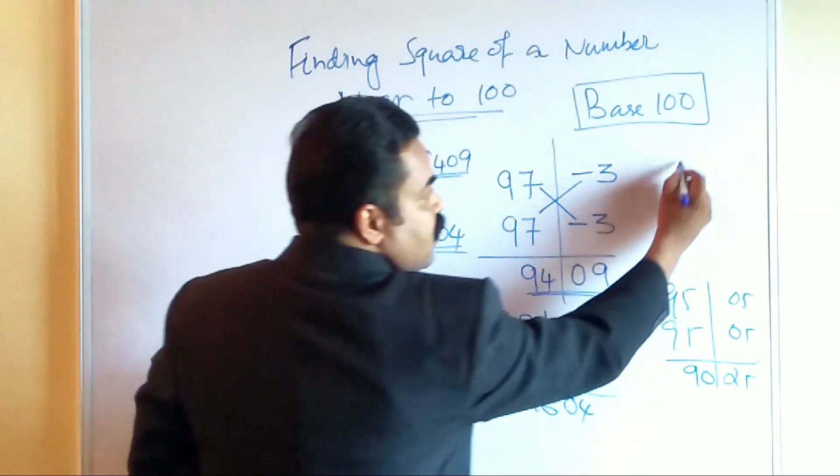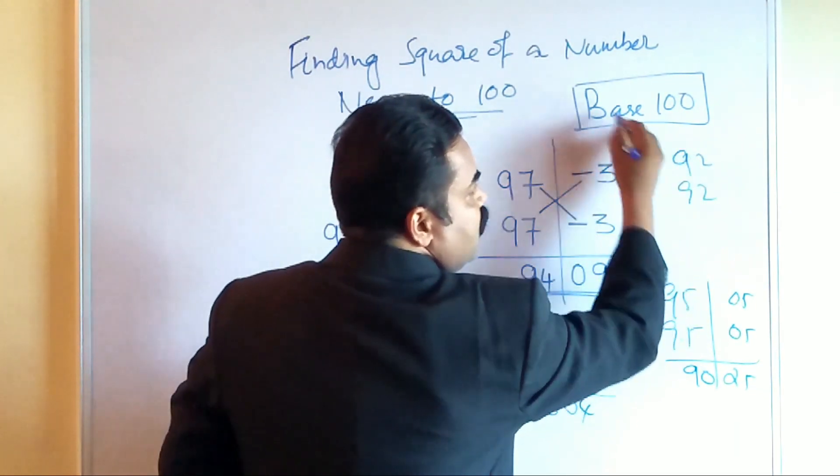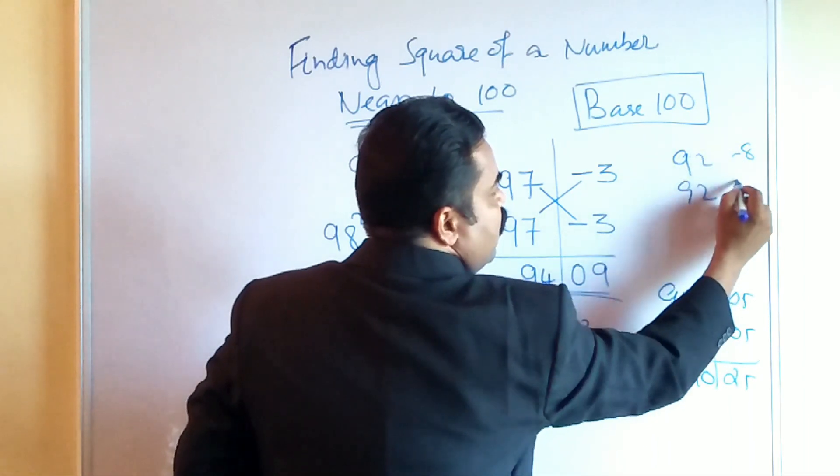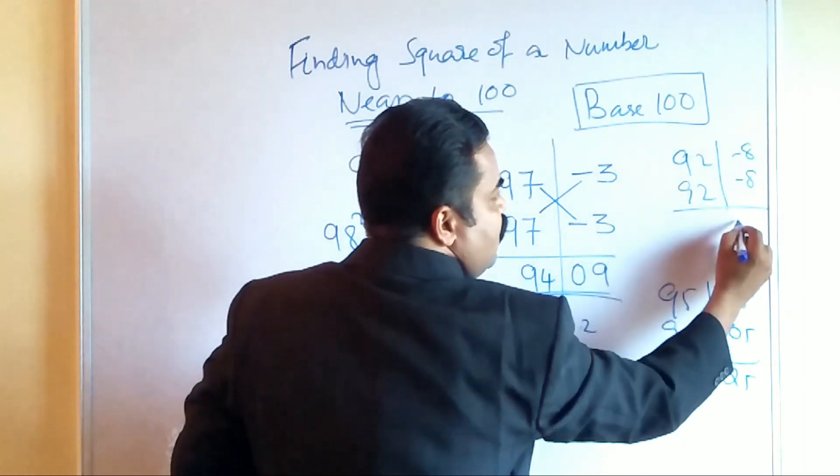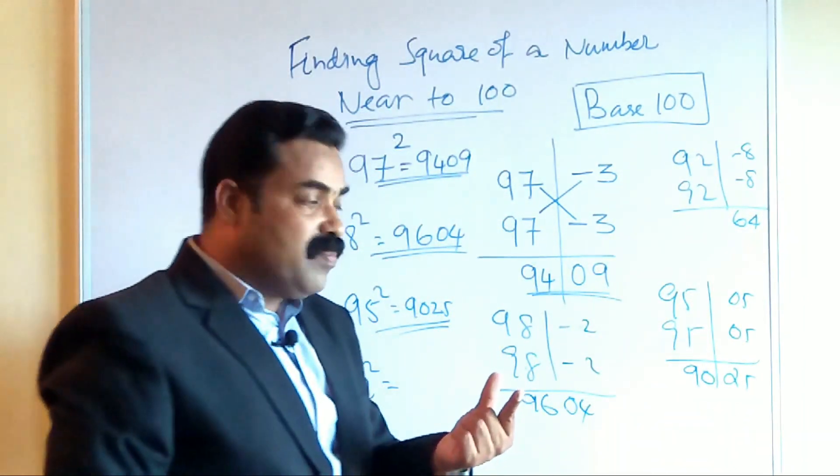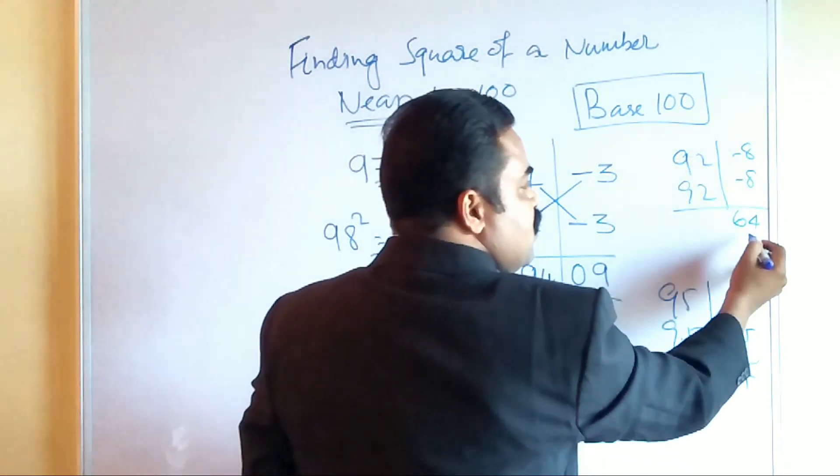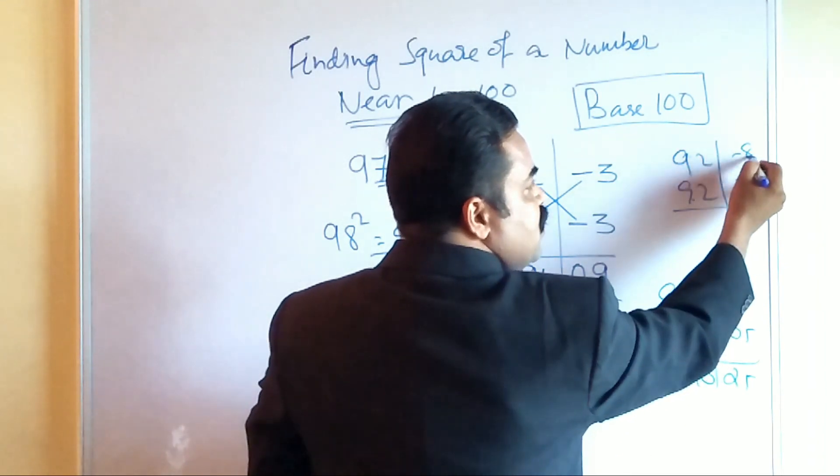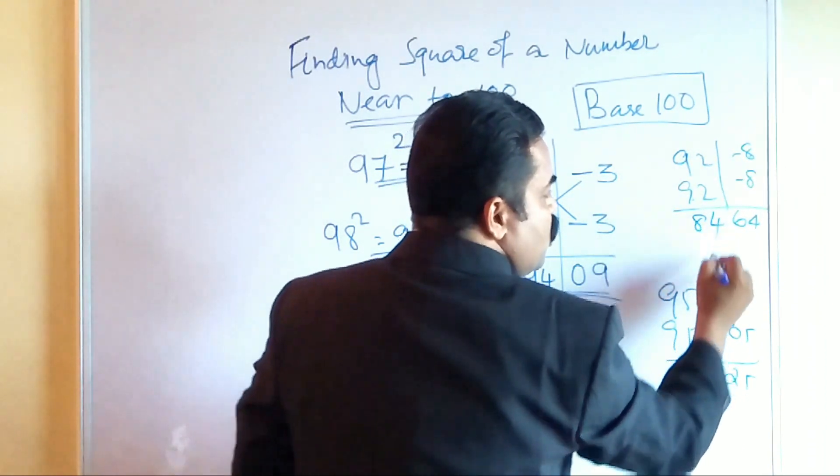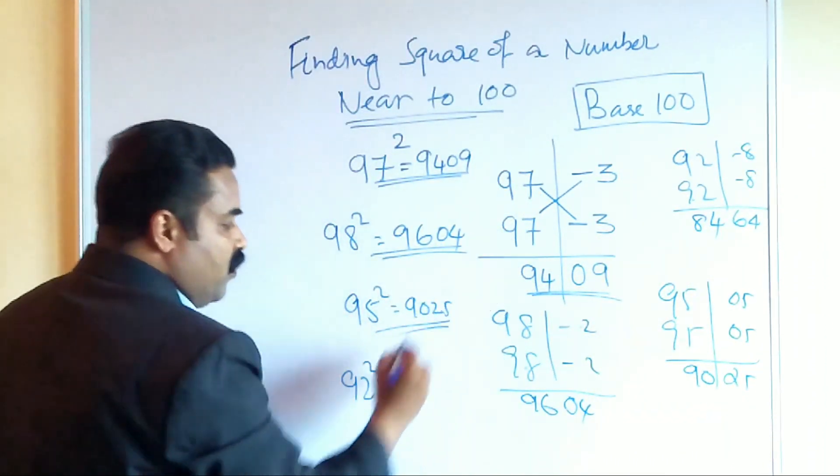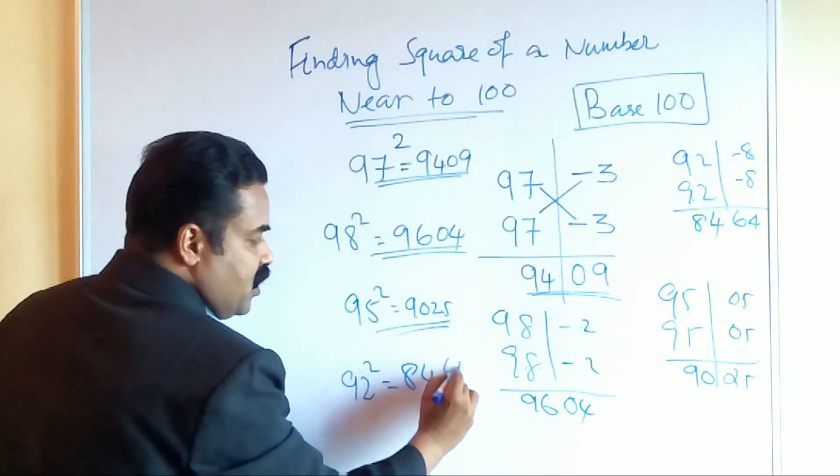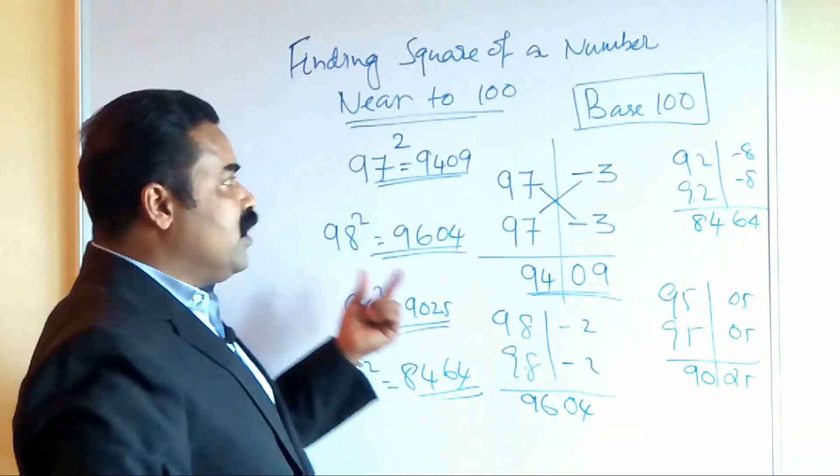You want to find out 92 square. What is 92 square? Again 92, 92. What is the deviation? Minus 8, minus 8. So 8 times 8 is 64. Always remember you have to write here two digits only. So 8 times 8 is 64. 92 minus 8 is 84. So what is your answer? 92 square will be 8464. This is the way you can find out the square of a number near to 100 and less than 100.